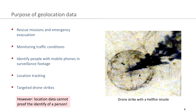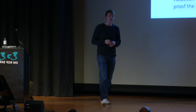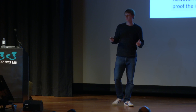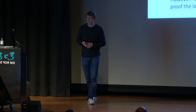The purpose of geolocation data — it is a neutral technology. We can use it for rescue missions; for example, if somebody got lost in the forest or in the mountains, we can use geolocation data to find and rescue that person. Or if you use Google traffic, you can profit from monitoring traffic conditions. But we can also use it to invade the privacy of persons — for example, identifying people on surveillance footage, or tracking the location of a certain individual over a longer period. And certainly, we can use this data for targeting drone strikes.